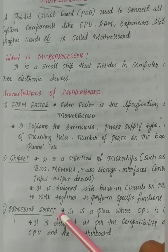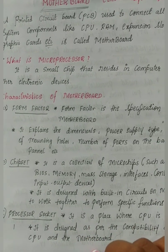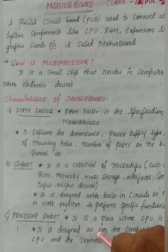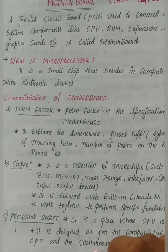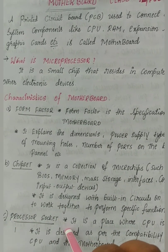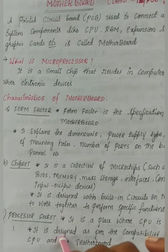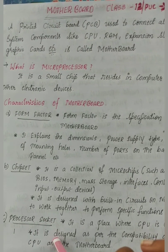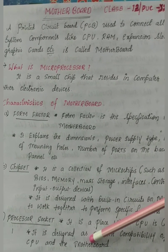The third characteristic is the processor socket. It is a space present inside the motherboard used to connect the CPU. The CPU, or processor, is a component, and the space reserved inside the motherboard to connect it is called the processor socket. One interesting fact is that the processor socket is the largest socket or space present inside the motherboard. This concludes the topic of motherboard and its characteristics. Thank you for watching — please like and subscribe to my channel.